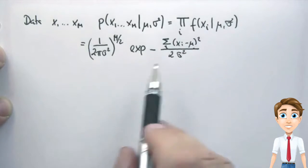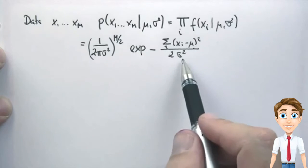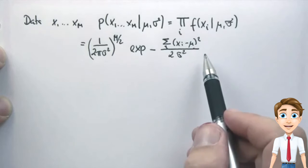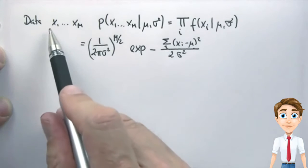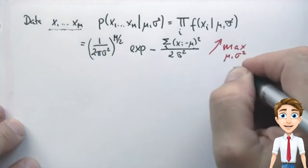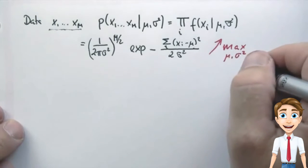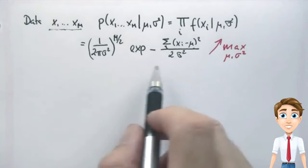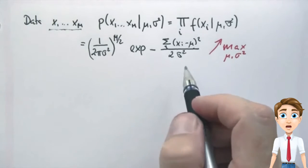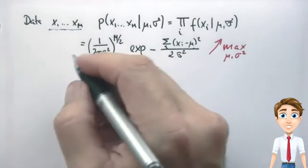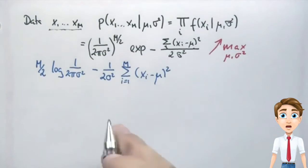So the best estimates for mu and sigma squared are those that maximize this entire expression over here for a given dataset x1 to xm. So we seek to maximize this over the unknown parameters mu and sigma squared. And now I will apply a trick: instead of maximizing this expression, I will maximize the logarithm of this expression. The logarithm is a monotonic function, so let's maximize instead the logarithm.